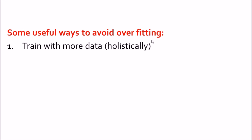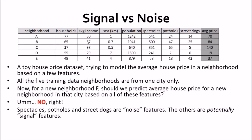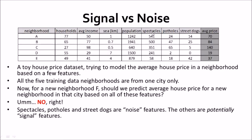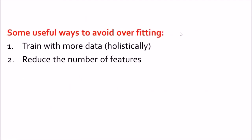Some useful ways to avoid overfitting: first, train with more data. If you want to predict the average price of a house in a neighborhood from a different city, you cannot use only this dataset — you need to include data from different cities and different states to get a more holistic view. The second method is to reduce the number of features, as we saw — by deleting the spectacles, potholes, and street dogs columns, we can potentially get better results and avoid overfitting.